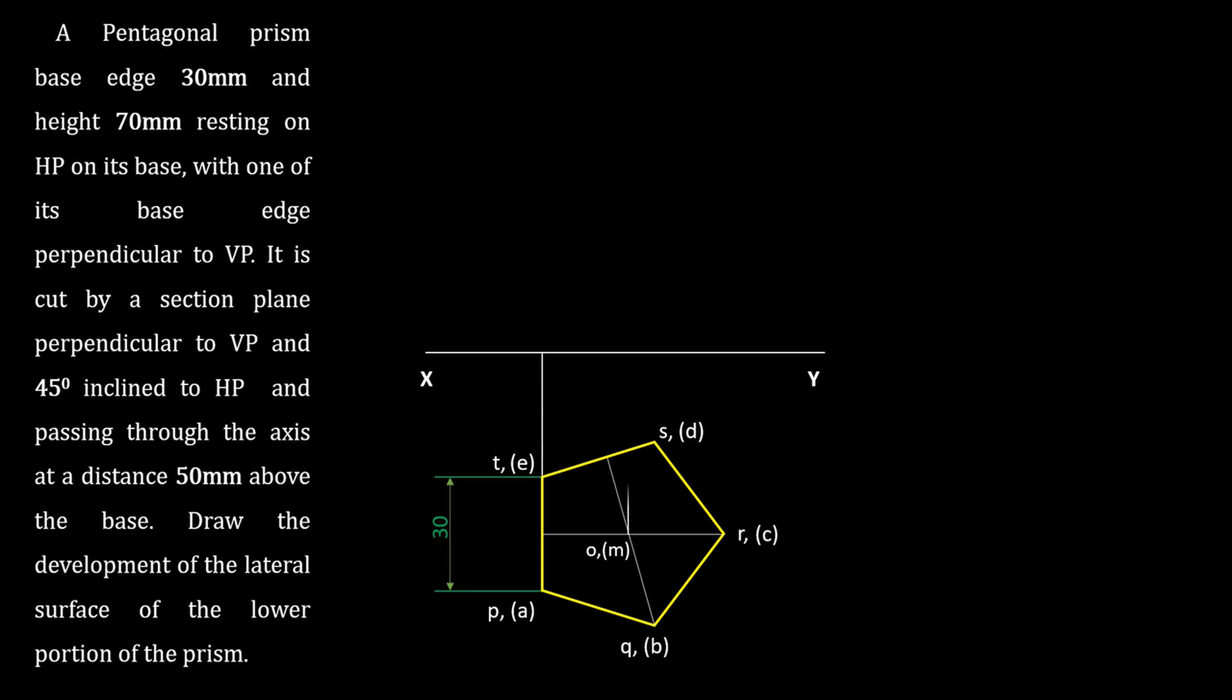Project all the corners to the front view. Locate the front view of the base corners on XY line as base is resting on HP. Axis height is 70mm. Draw the axis.